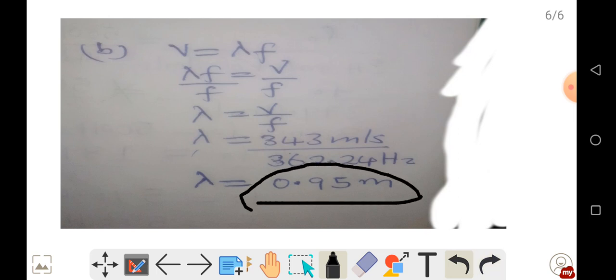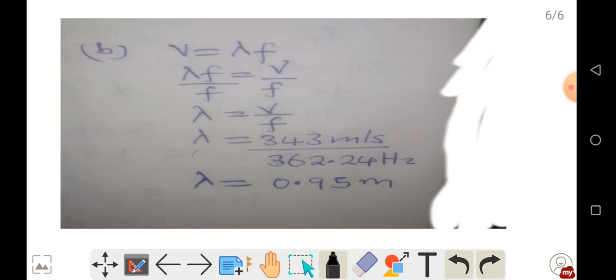This is the wavelength detected by a person on the platform as the train was approaching.